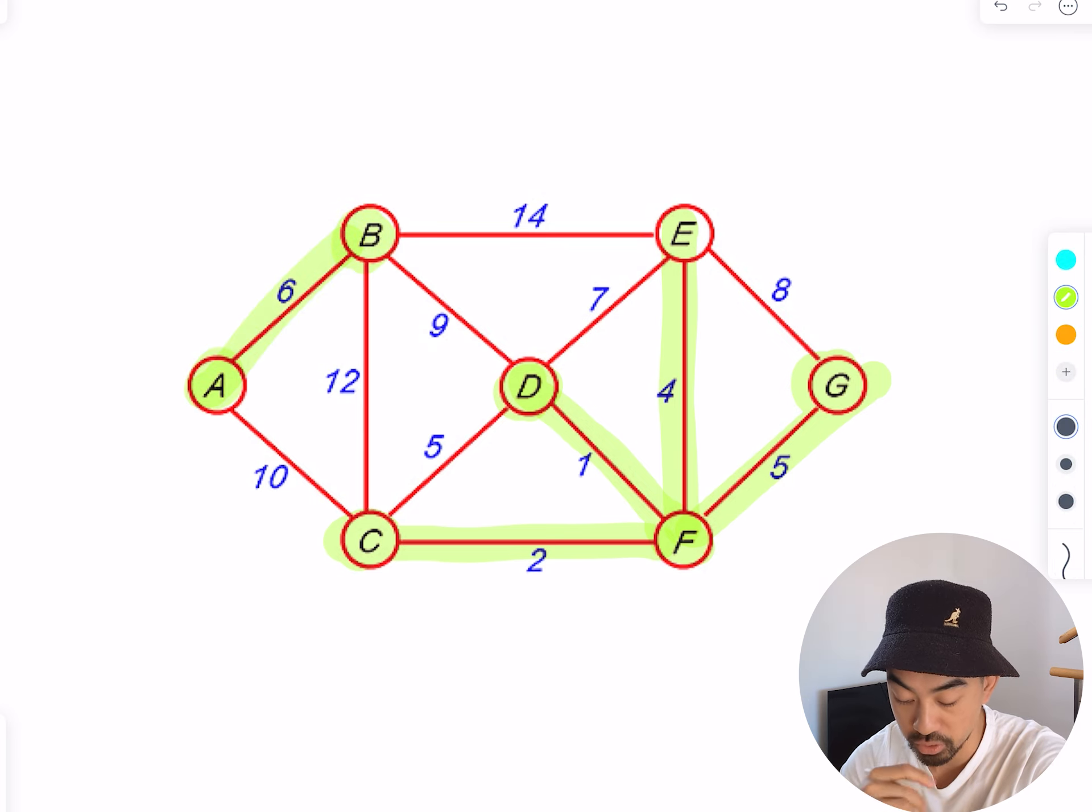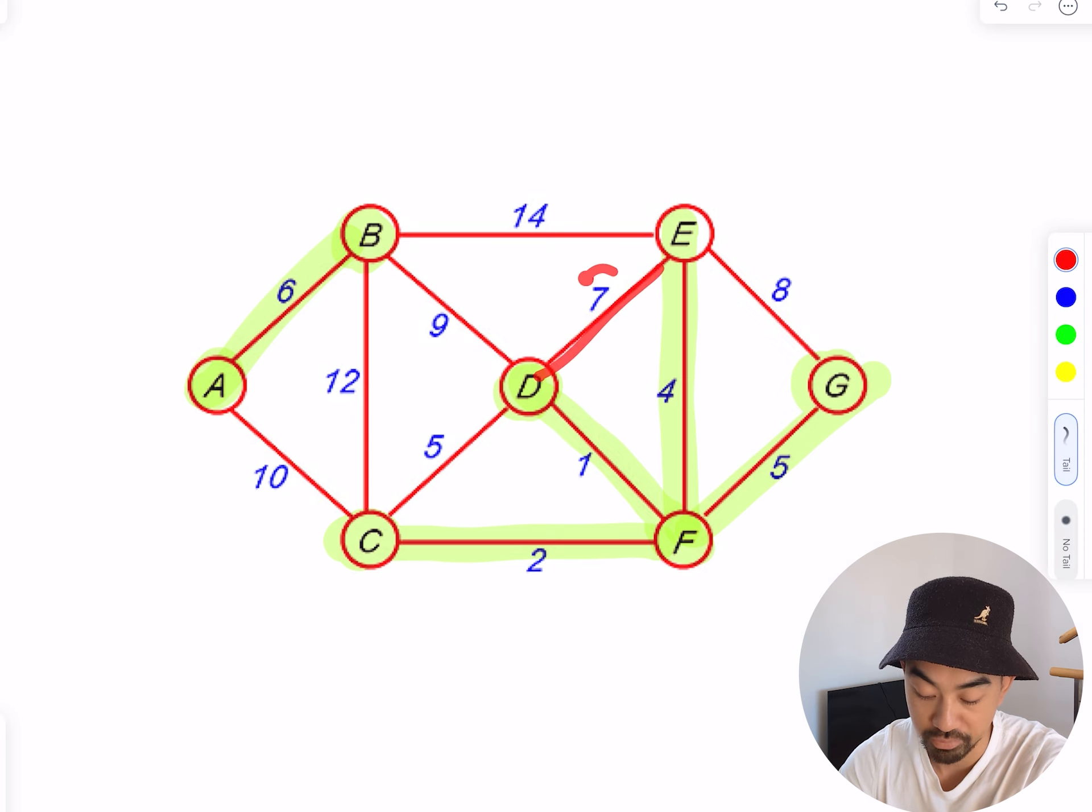Find the next smallest edge. I think it could be seven, but seven causes a problem because that'll make a loop. Same with eight, so I can't do that. I think I have to go for nine there.